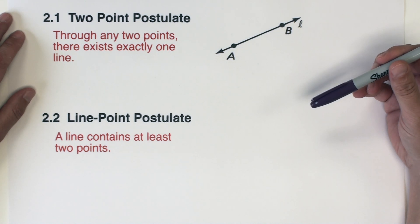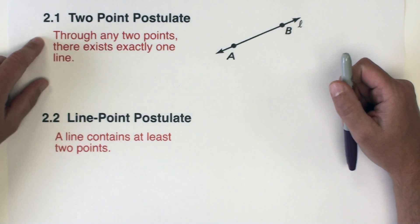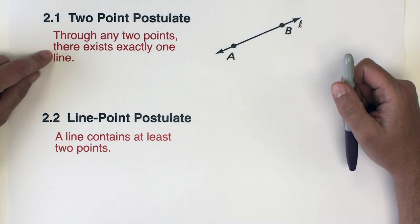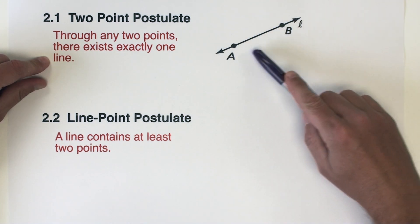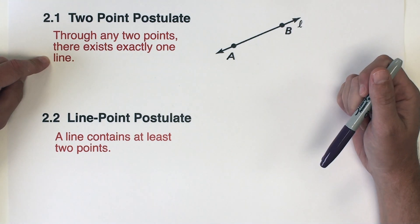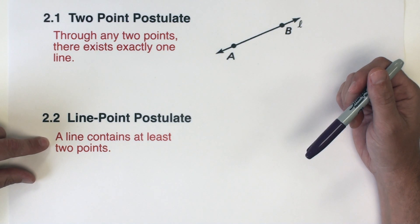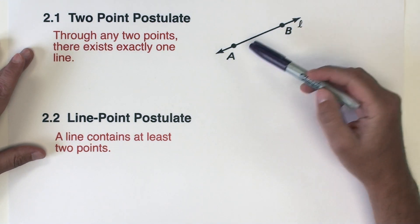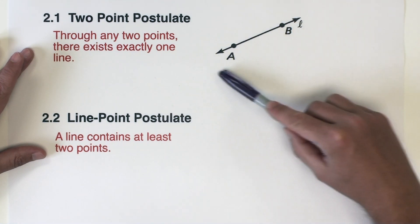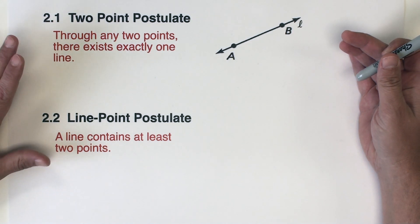The first two postulates are very similar in nature. We've got postulate 2.1, called the two-point postulate. It says through any two points there exists exactly one line, and we see a diagram here to illustrate that. The second postulate, called the line-point postulate, says a line contains at least two points. Very similar in nature. I'm going to write a specific statement based off of this diagram for each of these two postulates so you can see the difference between them.